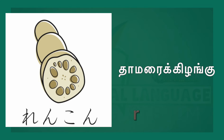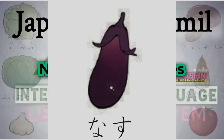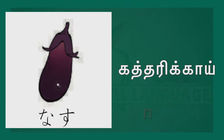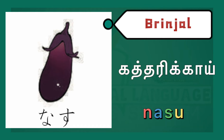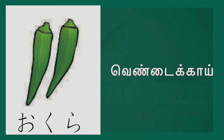Ninjin. Garlic. Green, red. Renkon. Lotus root. Nasu. Eggplant. Okura. Okra.